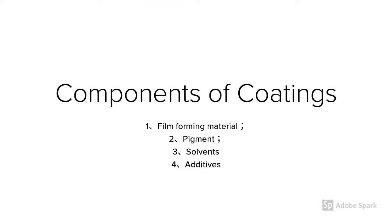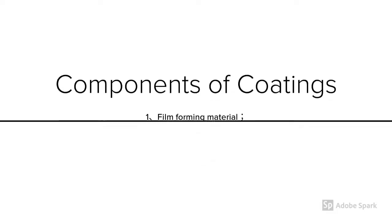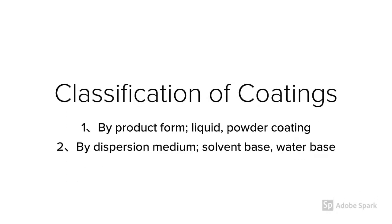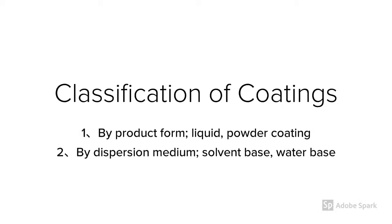Coatings consist of film-forming material, pigment, solvents, and additives. Coatings can be classified by three ways: by product form, which includes liquid and powder coating; and by dispersion medium, which includes solvent-based and water-based.